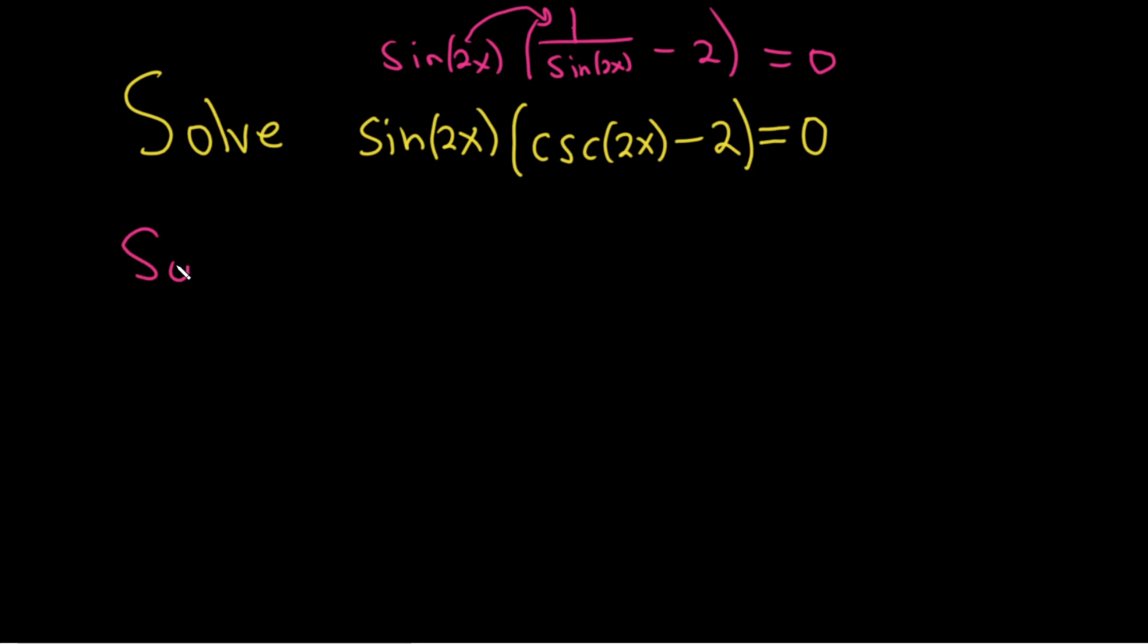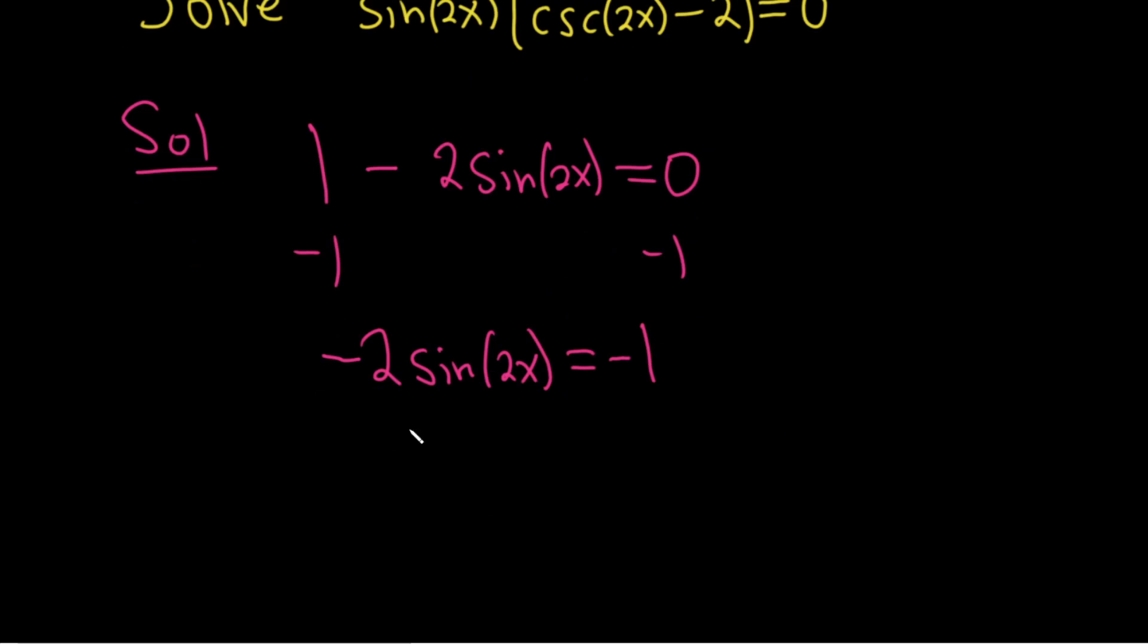Distributing through, sine 2x times 1 over sine 2x is going to give us 1, then minus 2 sine 2x, and then this is equal to 0. We can solve this for sine 2x by subtracting 1 from both sides. So we get negative 2 sine 2x equals negative 1. Then divide both sides by negative 2, which gives us sine 2x equals 1 over 2.